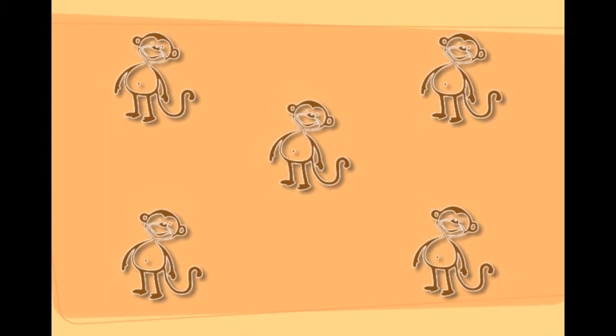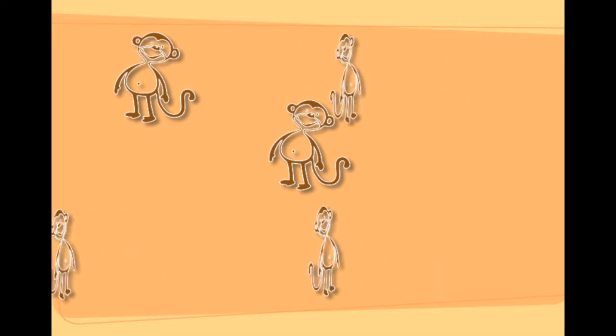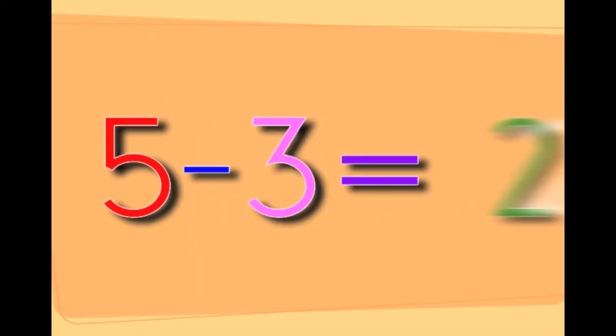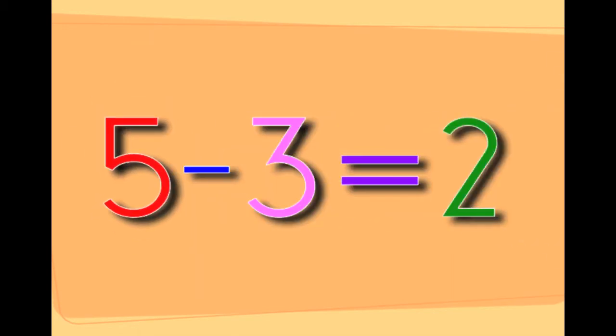These are five monkeys. If you take three monkeys away from the five monkeys it will leave you with two monkeys. Five minus three equals two.